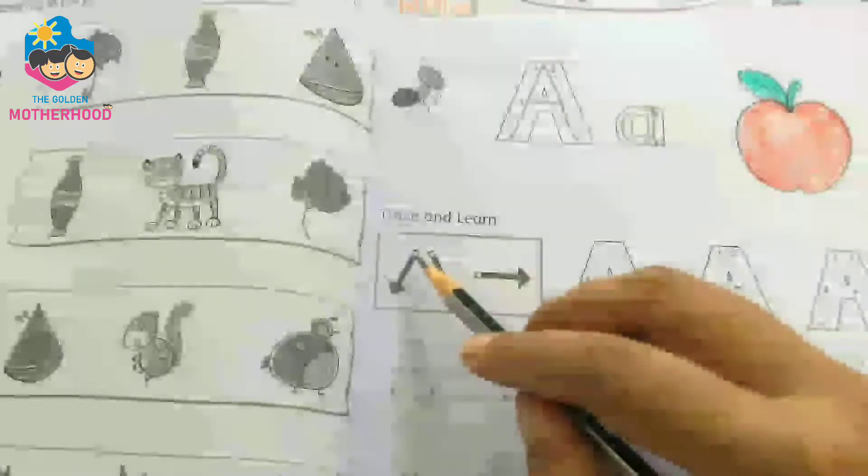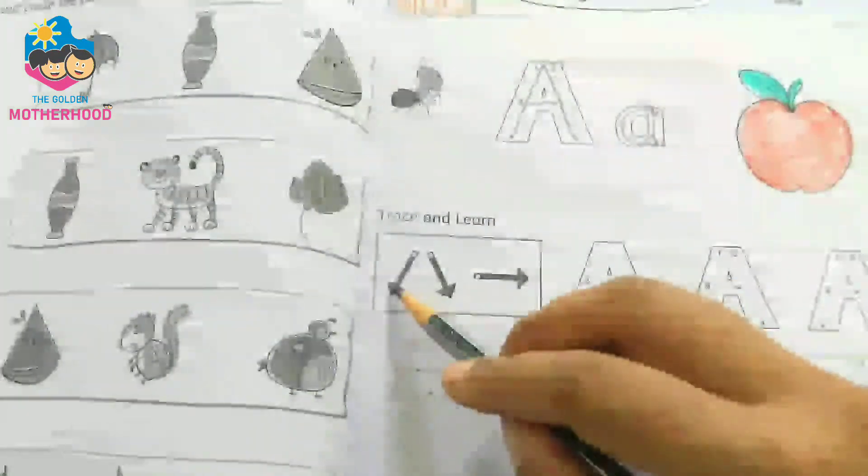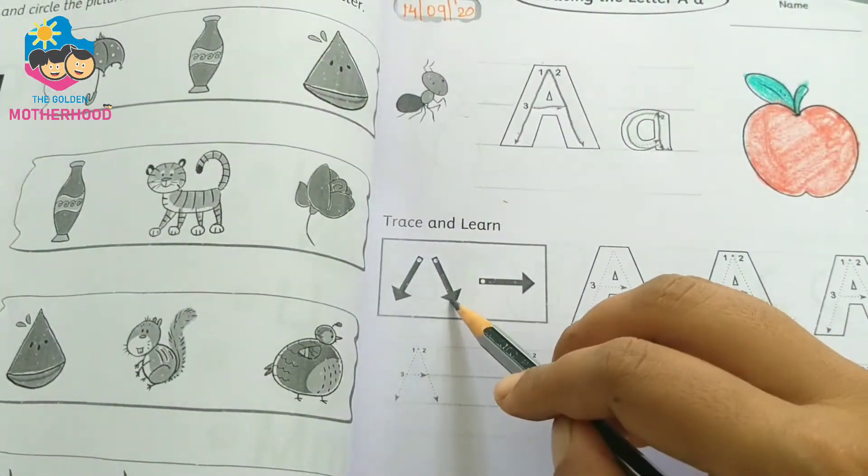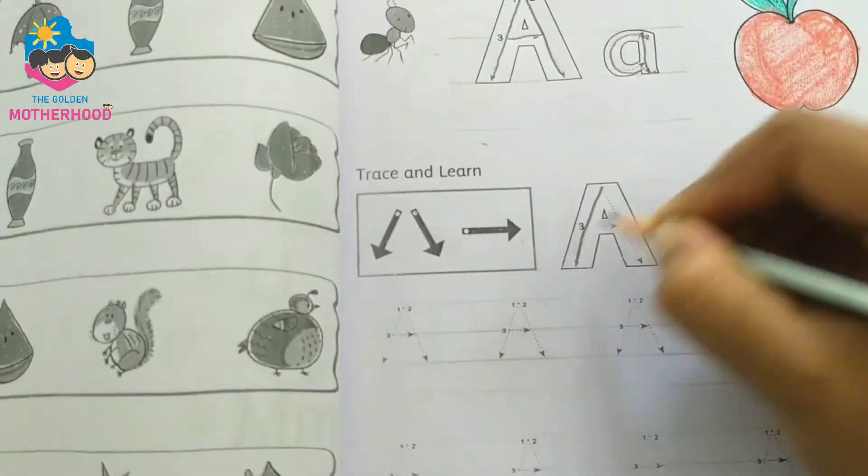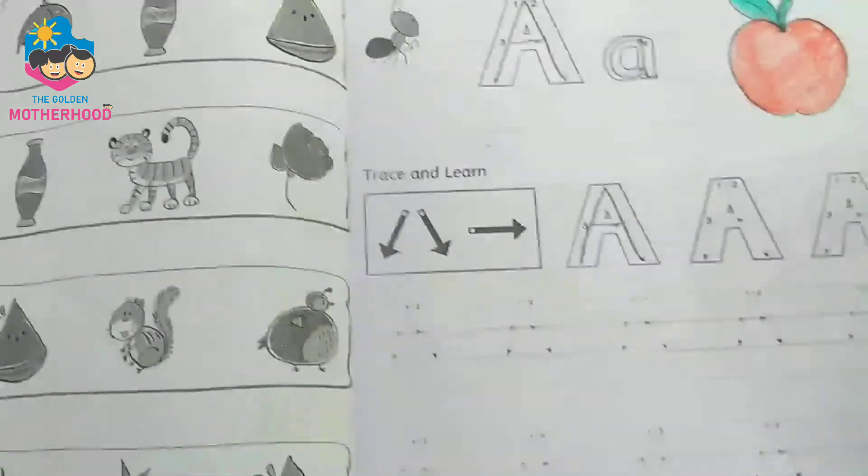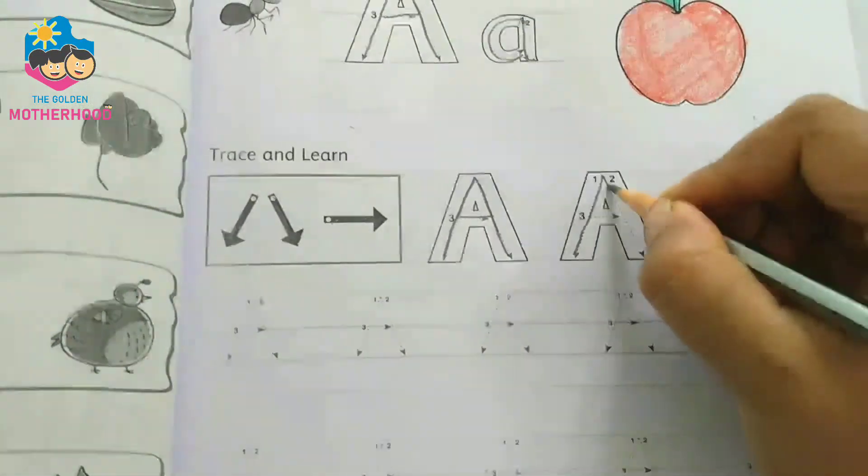Tracing the letter A is a metaphor. Two slant lines and one sleeping line, two slant lines, one sleeping line. This is a slant, another slant, sleeping line.